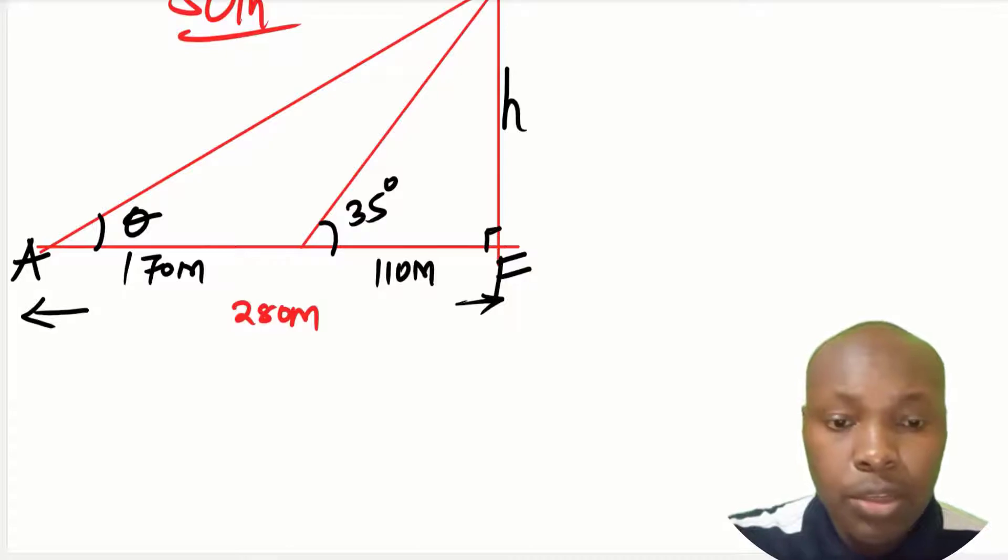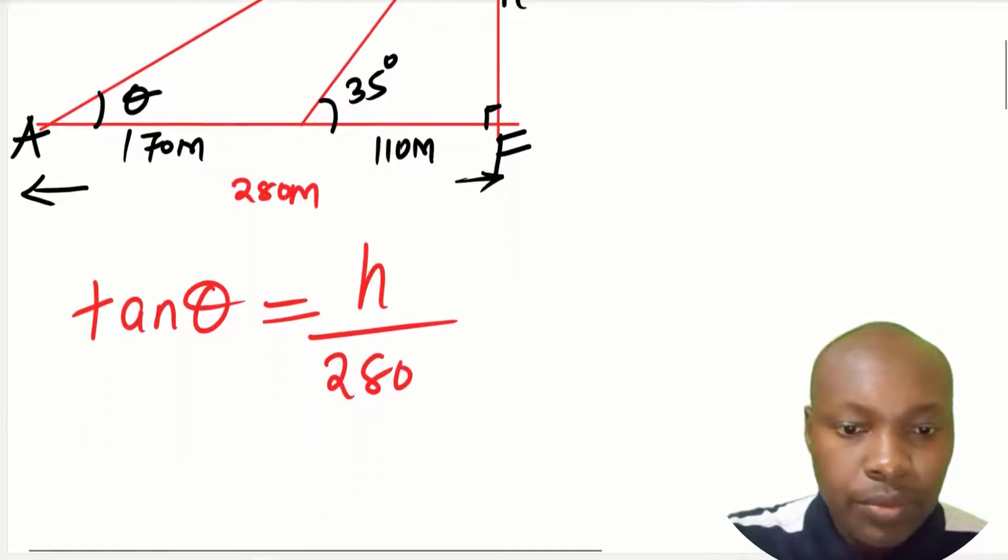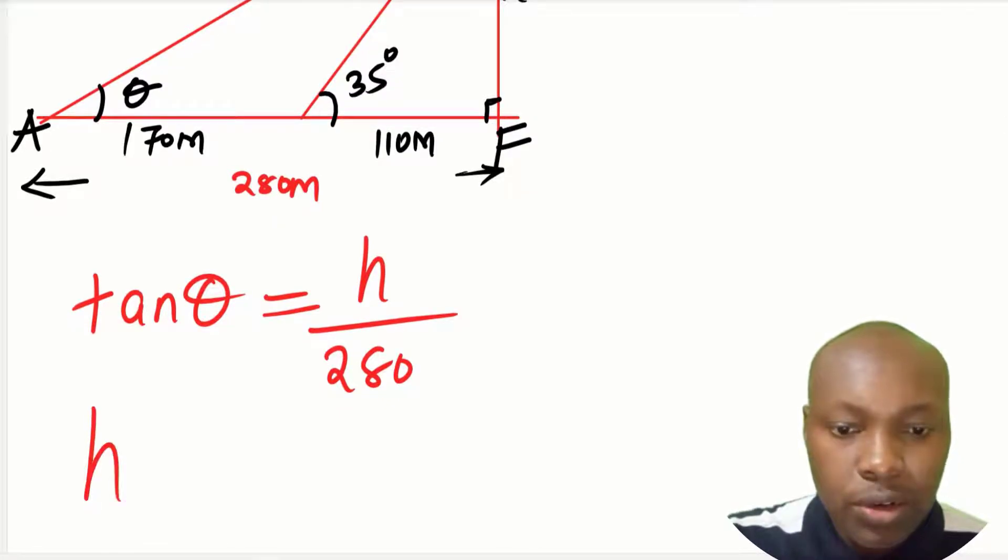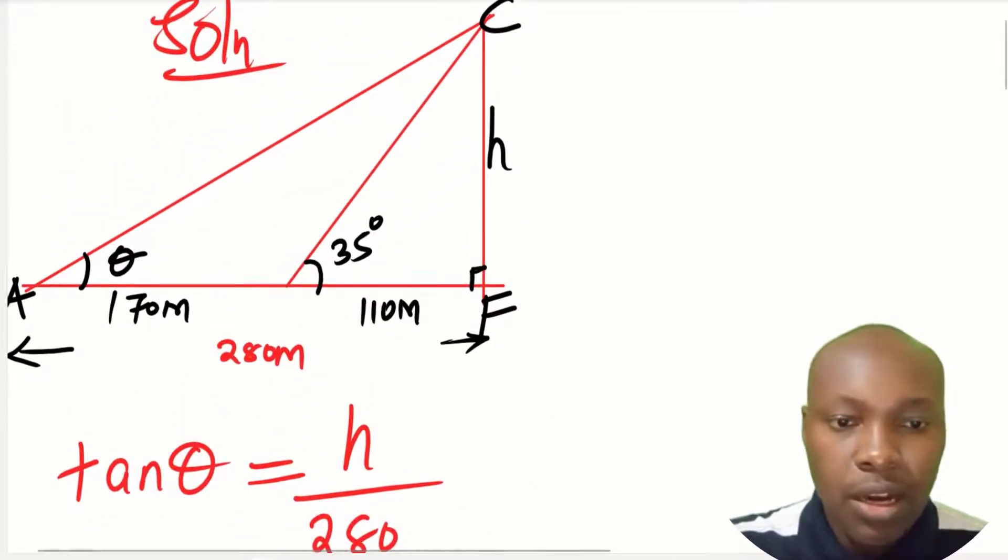Now let's go to the working that we're supposed to get that angle. So if you consider the largest triangle, that is triangle ACF, you get tan of theta is equals to opposite over adjacent. Opposite is h, that is the height, and then adjacent is 280. So when we make h the subject of the formula, we get h is equals to 280 tan of theta.